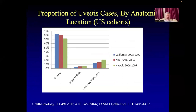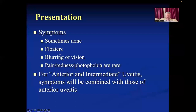Epidemiologically, from three different population-based studies using Kaiser or US VA Medical Center databases, around 5% of population uveitis cases will be intermediate uveitis — much, much less common than anterior uveitis.